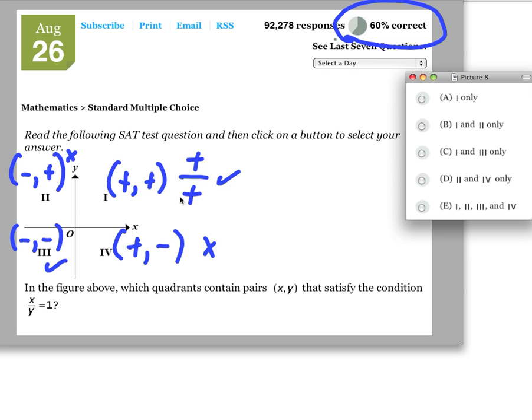So the answer is going to be quadrants 1 and quadrants 3. And that is answer choice C.